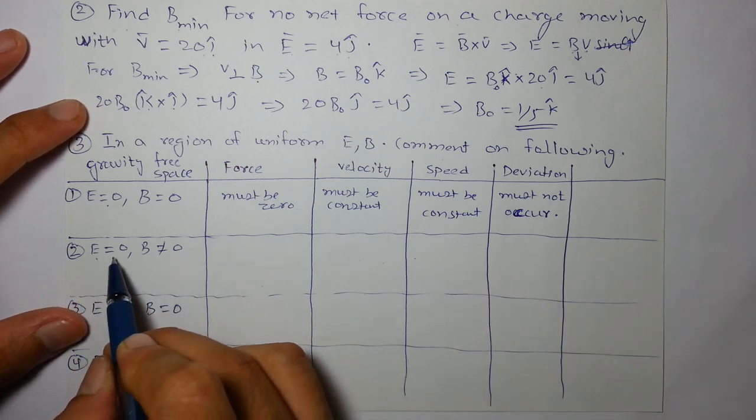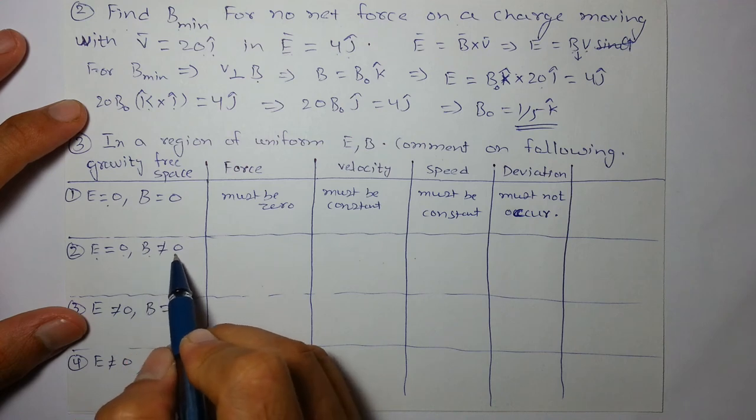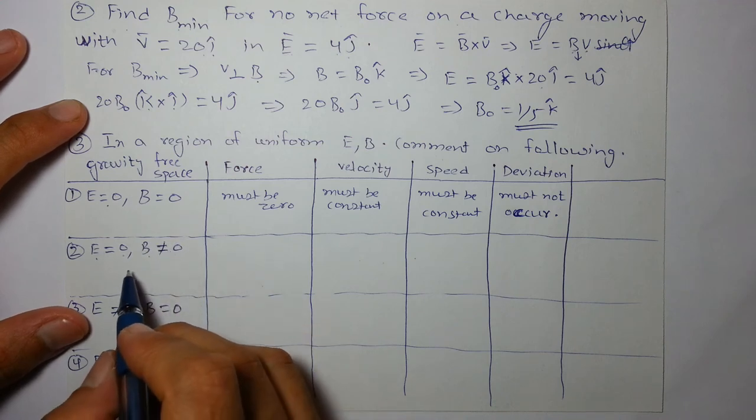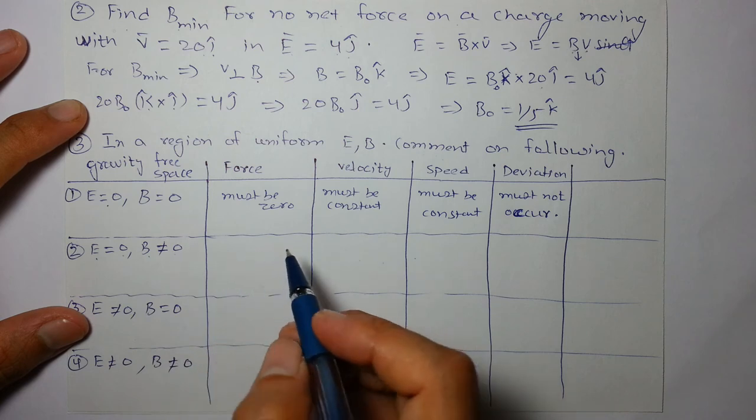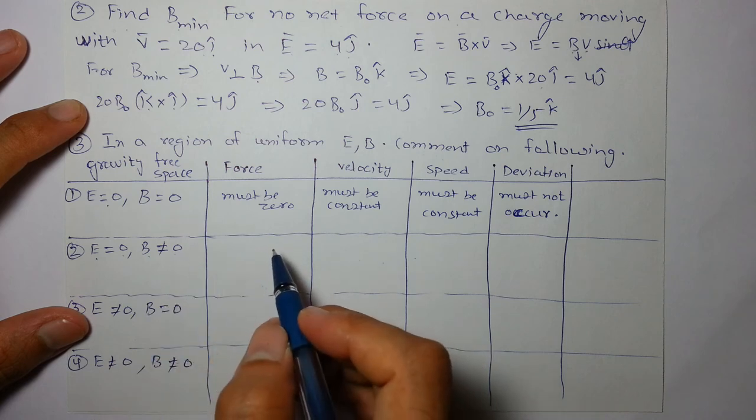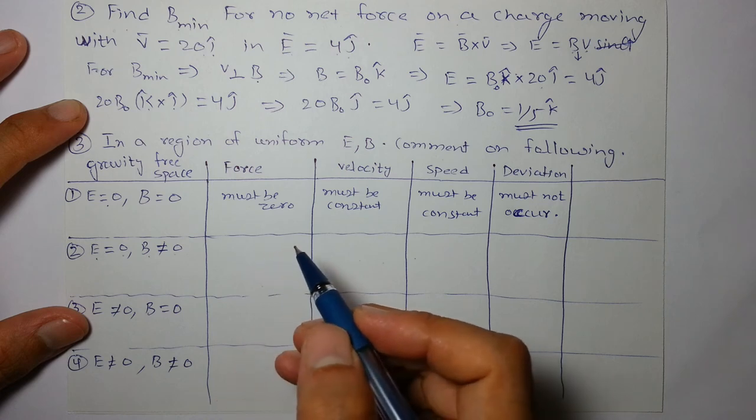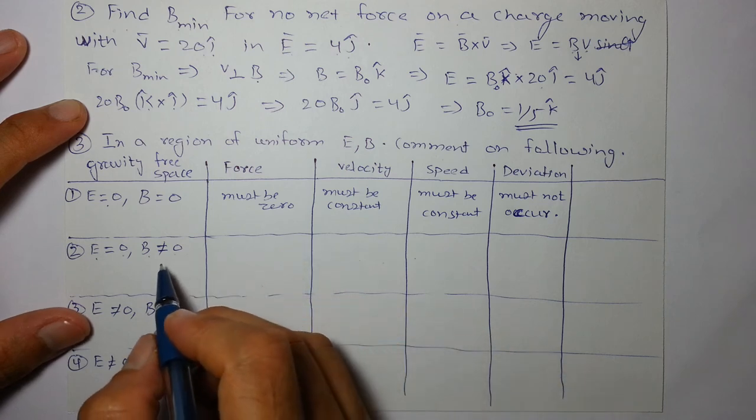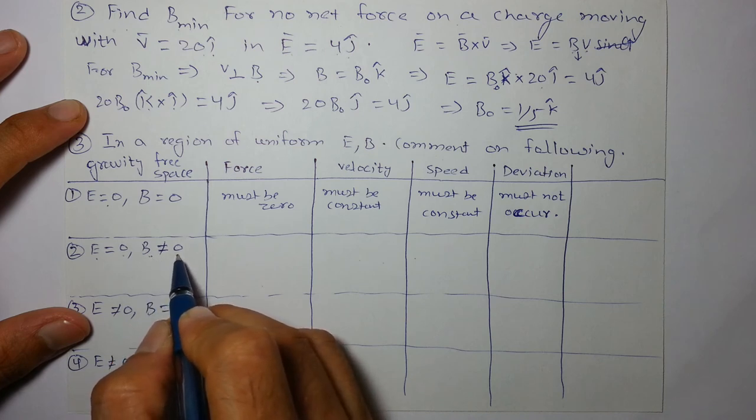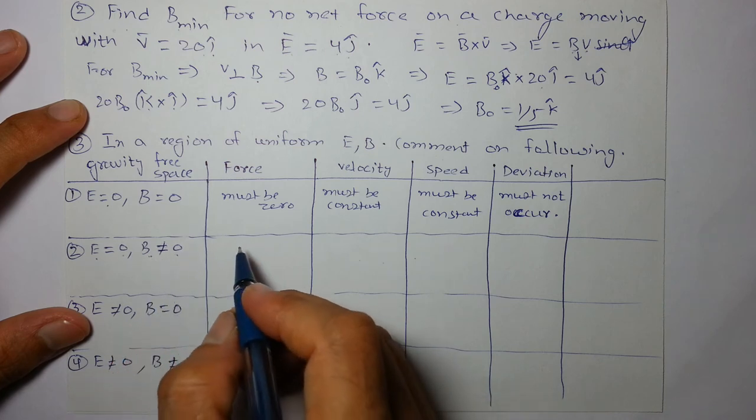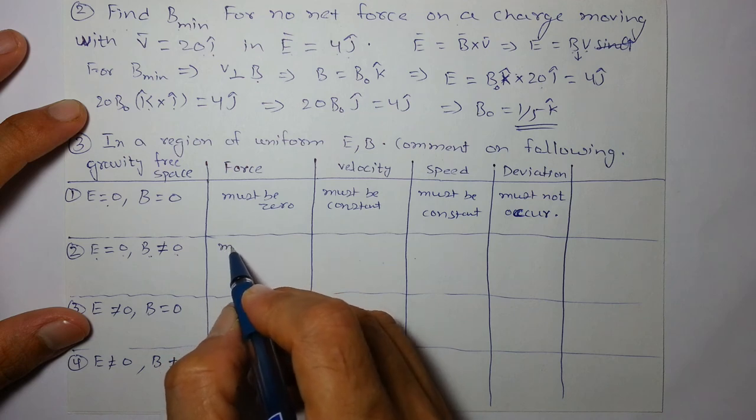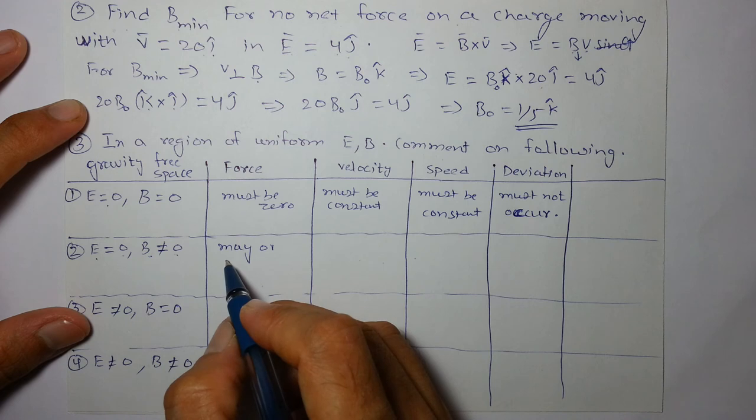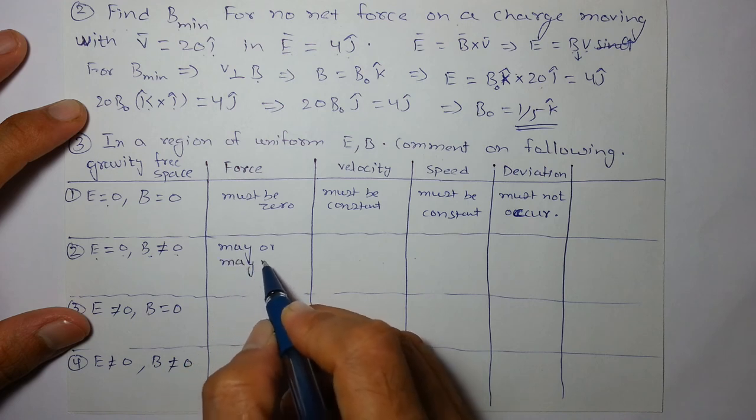Next case is Electric field zero hai, but magnetic field hai. Okay, carefully see. Magnetic field hone ke bavzood bhi it's possible that force may not act. Because V cross B can be zero. If velocity is zero, or V and B are parallel or anti-parallel. So this can be possible. Even if magnetic field is there there should be no magnetic force. So F may or may not act.